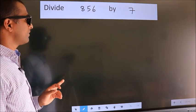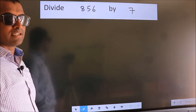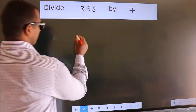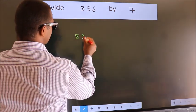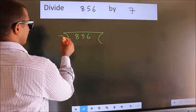Divide 856 by 7. To do this division, we should frame it in this way. 856 here, 7 here.